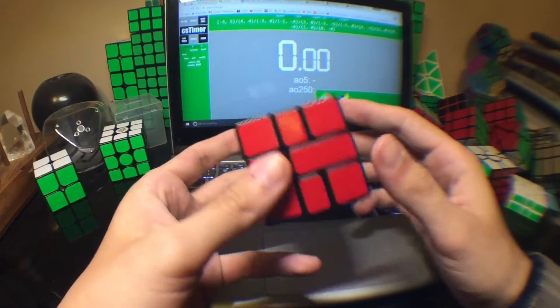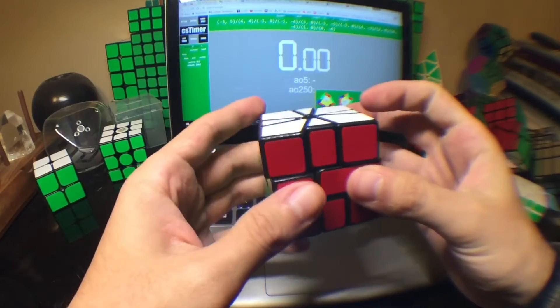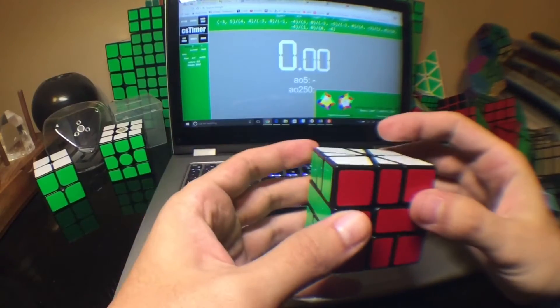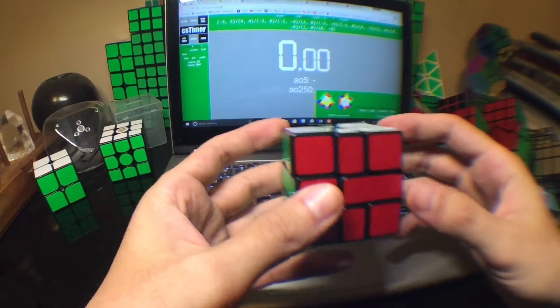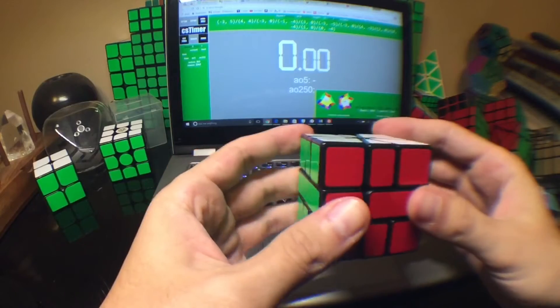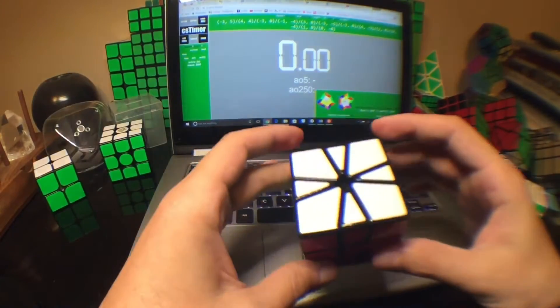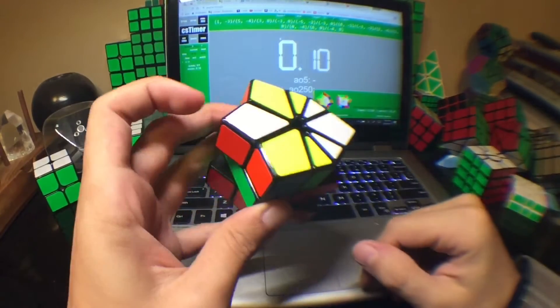Alright, I'm going to do some Square-1 example solves because it seemed like people liked my last one. I think when I made that I averaged around 19, and I just recently got sub-15 global average, so I think I could give some better advice at this point. I'll link the scrambles in the description.